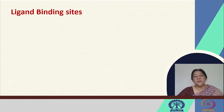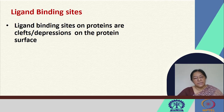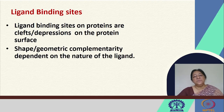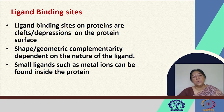We have seen protein-ligand interactions in previous lectures. Now we will look at ligand binding sites in more detail. The ligand binding sites on proteins are clefts or depressions on the protein surface. Small ligands such as oxygen, carbon dioxide, or metal ions are found inside the protein, with a network or channel that takes them from the surface to the center or active site.